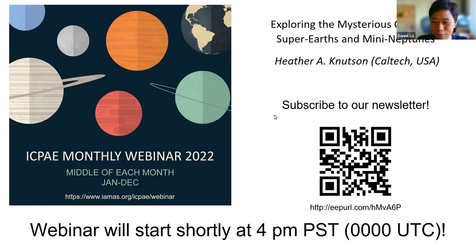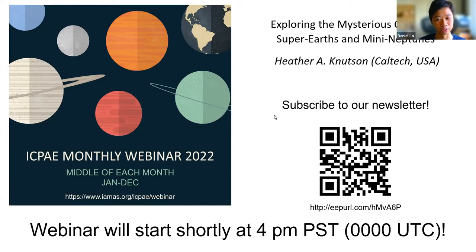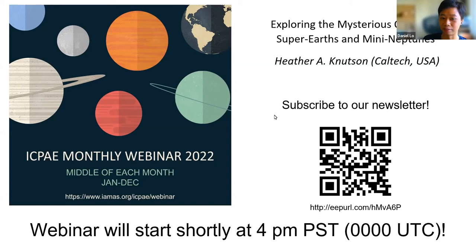Her research focuses on using present-day properties of exoplanetary systems to explore how these planetary systems form and evolve. She and her collaborators have used telescope observations to pin down key properties of exoplanet atmospheres, including temperatures, composition, the presence or absence of aerosols, and atmospheric escape. Her talk today is titled: Exploring the Mysterious Origins of Super-Earths and Mini-Neptunes.